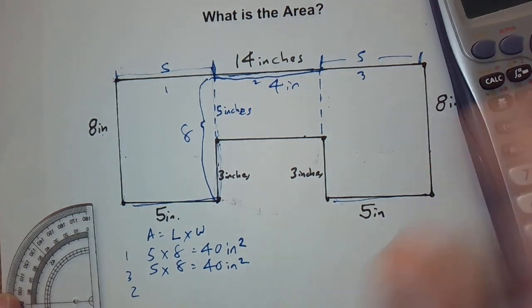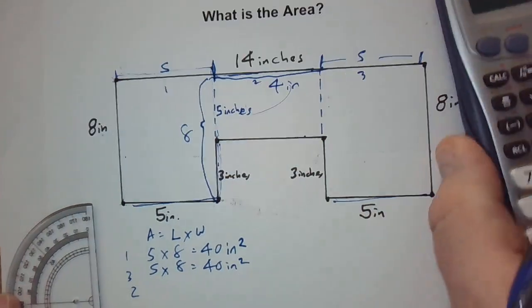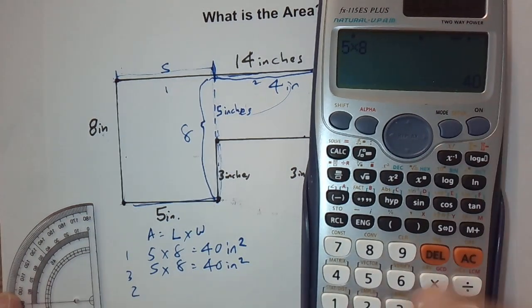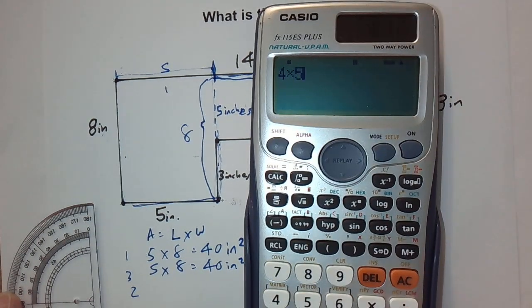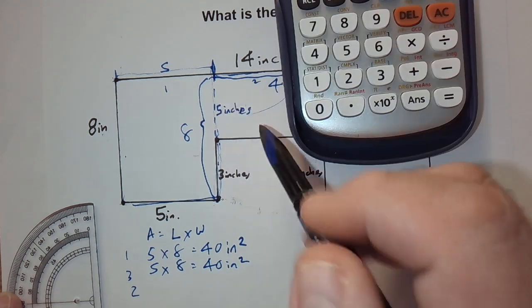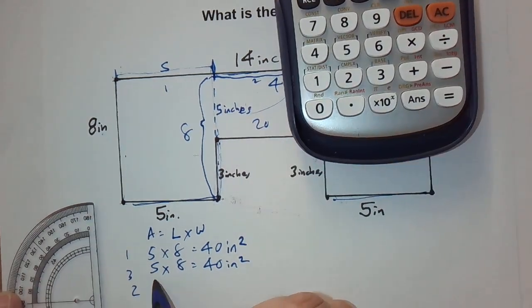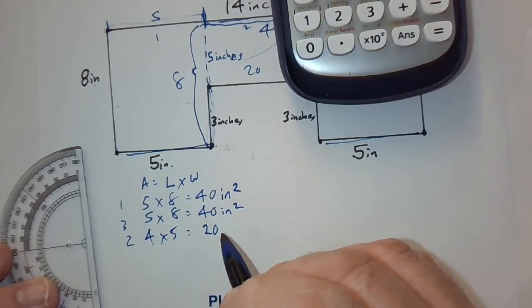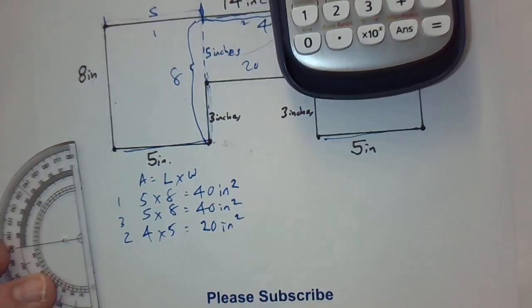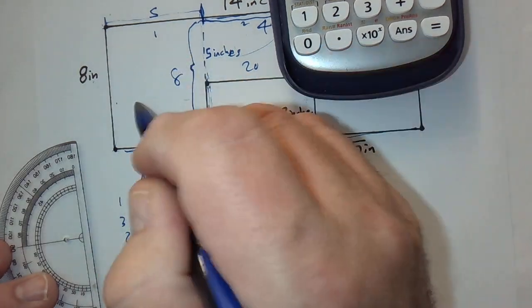So, the last part, this last rectangle here, is going to be four inches times five inches. So, we do four times five, and that's going to be 20. So, this part is 20. So, four by five is 20 inches. And, again, it's squared. So, we found this one is 40.